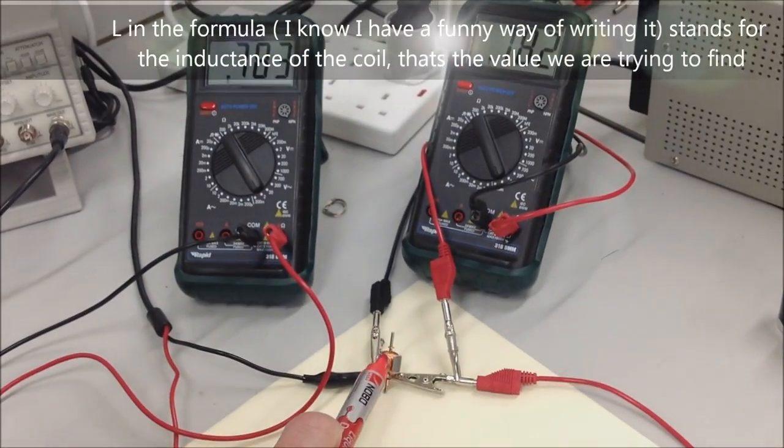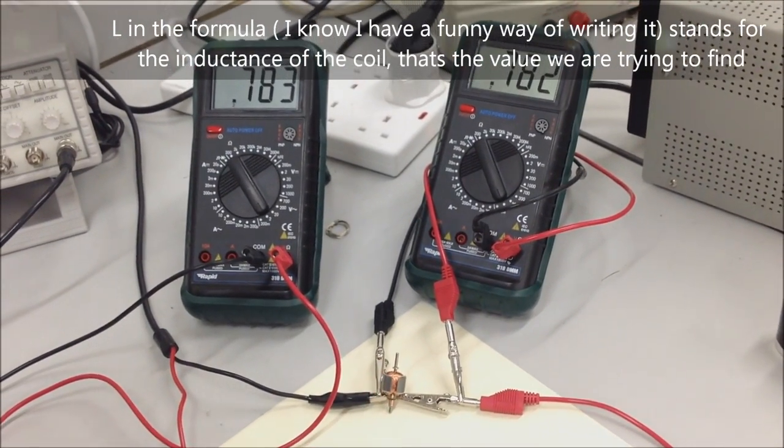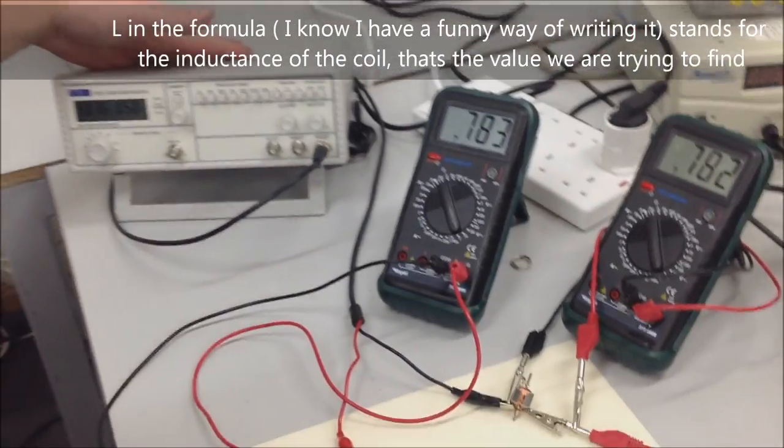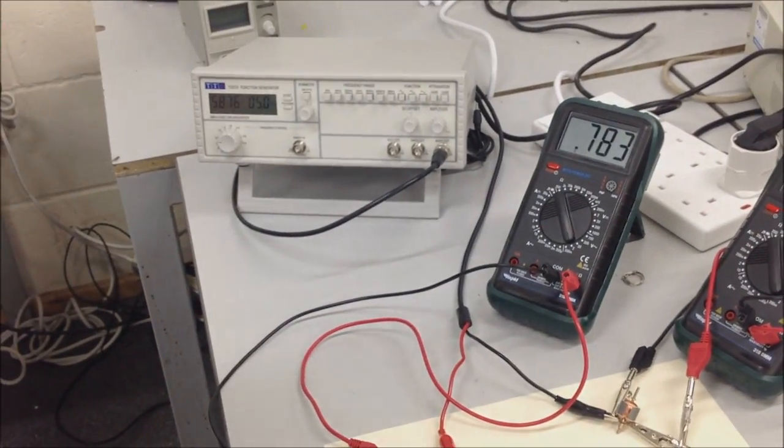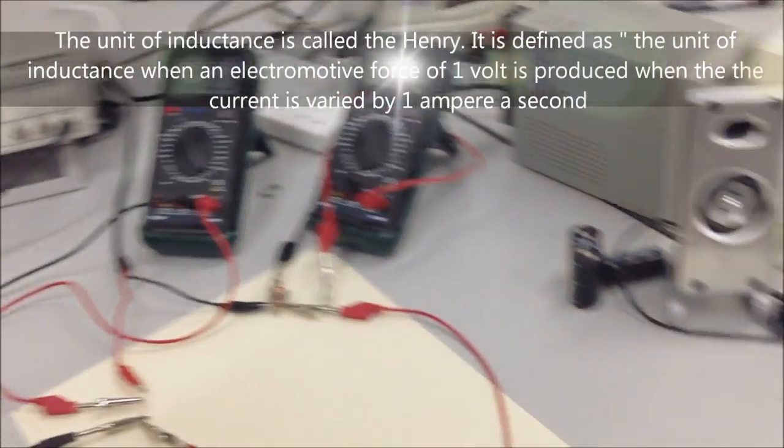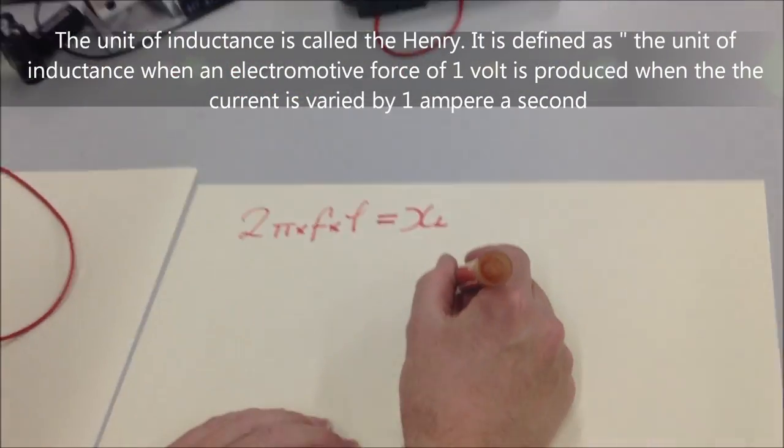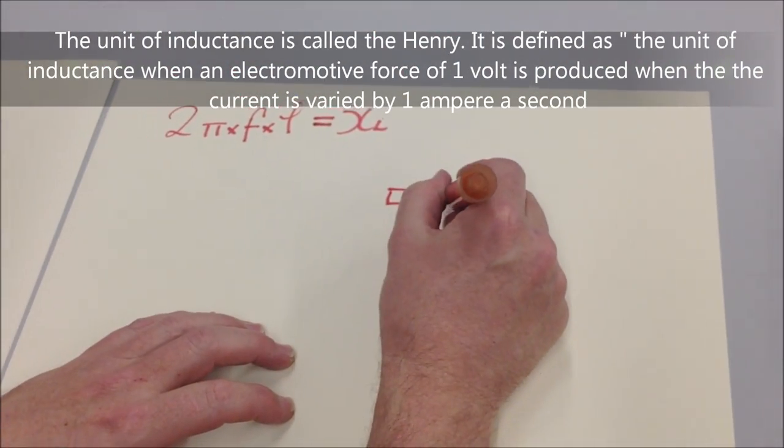We've got the armature coil there connected up to a function generator to give a sine wave output. We've got two multimeters and I'm just going to draw the circuit here.